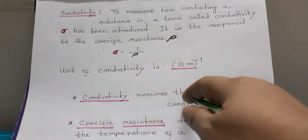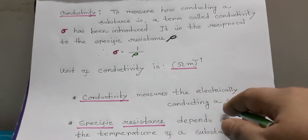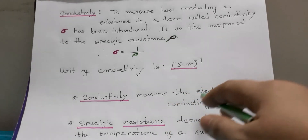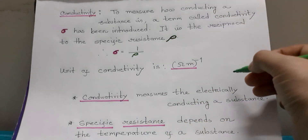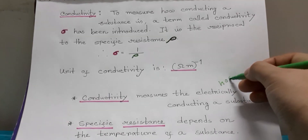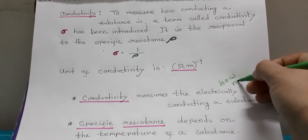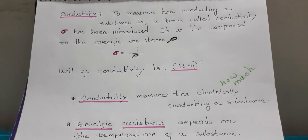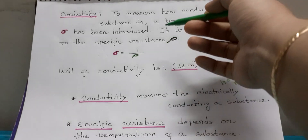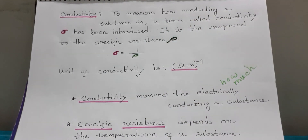Conductivity measures how electrically conducting a substance is — that means how much electricity can pass through a substance. Specific resistance is the reciprocal of conductivity.